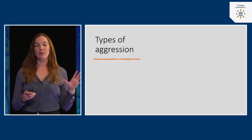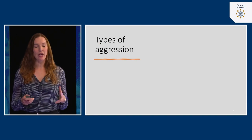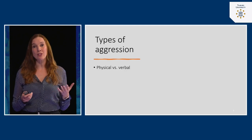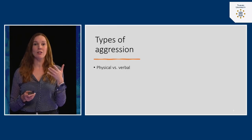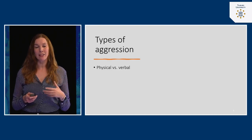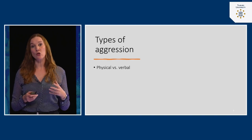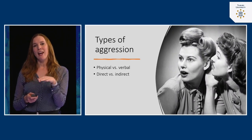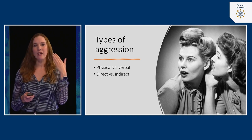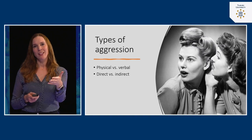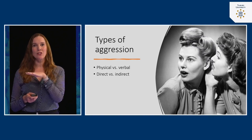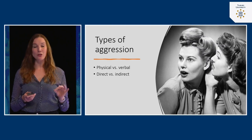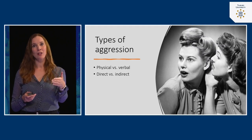There are many variations in aggressive behavior. When you think about aggression you might think of someone punching someone else — that is physical aggression. But also calling someone names, shouting aggressively, or saying very mean things to a person — that's verbal aggression. Then you have direct versus indirect aggression. Direct aggression is face-to-face, immediately towards that person, while indirect aggression is behind someone's back. Gossiping, for example, is also a form of aggression with the intention to harm a person.